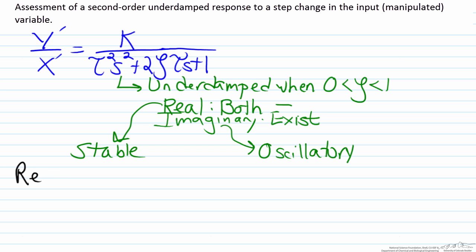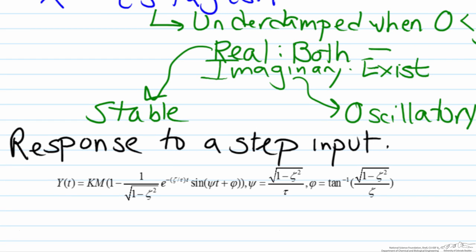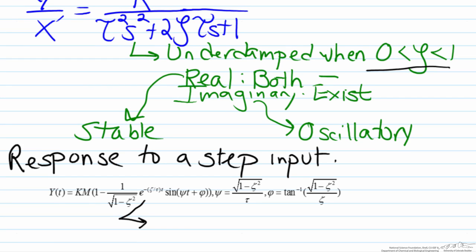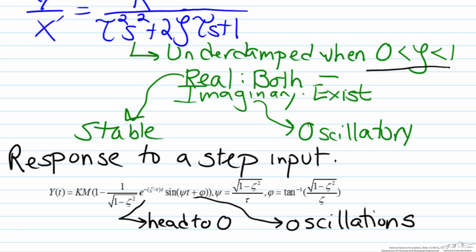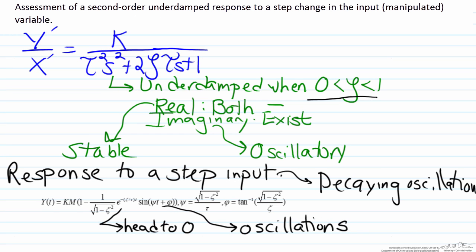We can do the Laplace transforms for this, but the response to a step input will be the equation provided below. Looking at this response, we can see it will be stable and oscillatory. The exponential part has a negative sign, and since zeta, tau, and t must all be positive, this term heads to zero. The term multiplied by it is a sine wave, so the response will be decaying oscillations. As time goes to infinity the exponential term goes away and the system converges to km, where k is the steady state gain and m is the magnitude of the step input.